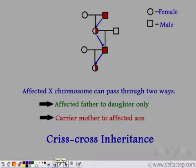Now see, the affected X chromosome can pass in two ways. It can pass from the affected father to the daughter and it can also pass from the carrier mother to the affected son, thus forming a zigzag pattern. And so this form of inheritance is known as Criss-Cross Inheritance.